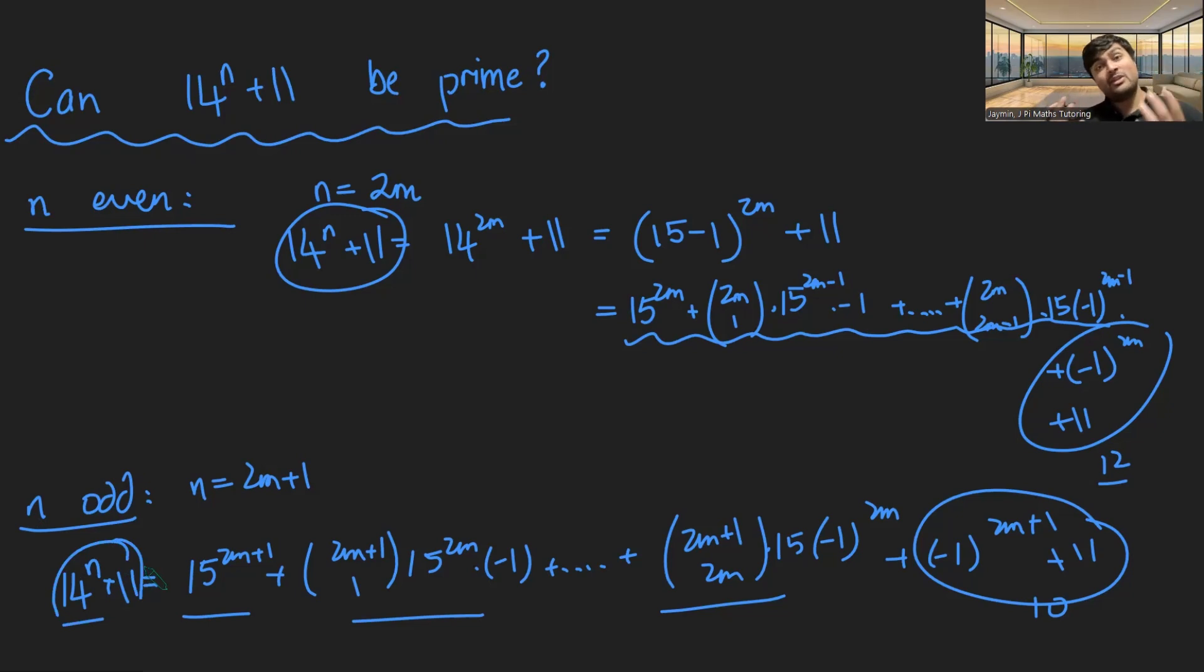So in the case n is even, we know the numbers are multiple of 3. In the case n is odd, it's going to be a multiple of 5. So it can never be prime. And that's our proof.